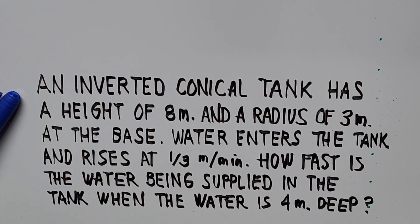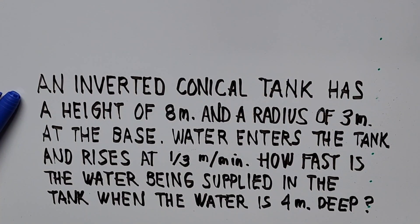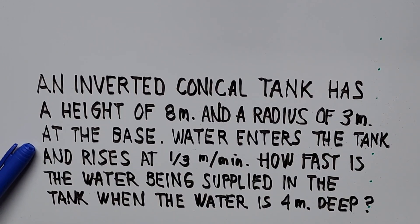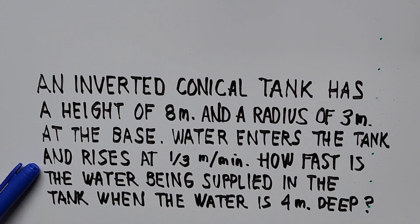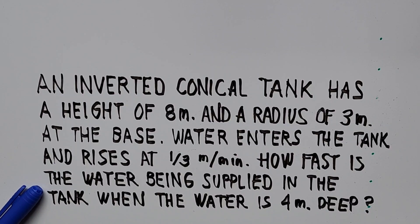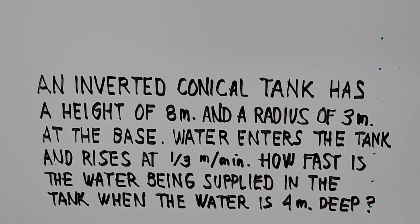We have here a word problem. An inverted conical tank has a height of 8 meters and a radius of 3 meters at the base. Water enters the tank and rises at one-third of a meter per minute. So in order to solve this kind of problem, we need a good working illustration of what the problem is indicating and what's being asked.